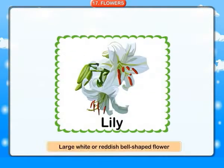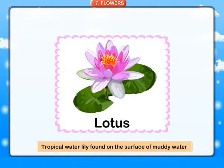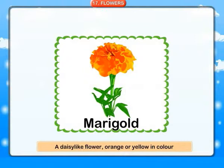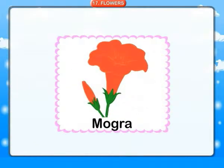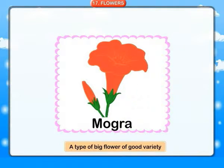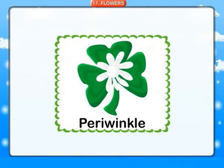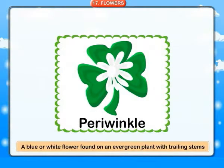Lily: a large white or reddish bell-shaped flower. Lotus: a tropical water lily found on the surface of muddy water. Marigold: a daisy-like flower, orange or yellow in color. Mogra: a type of big flower of good variety. Periwinkle: a blue or white flower found on an evergreen plant with trailing stems.